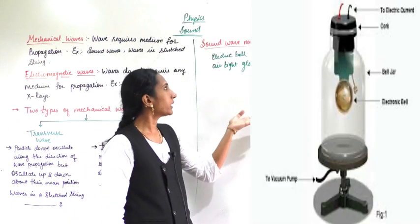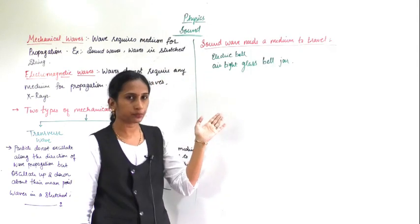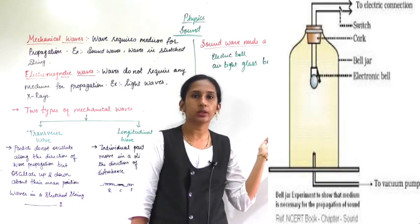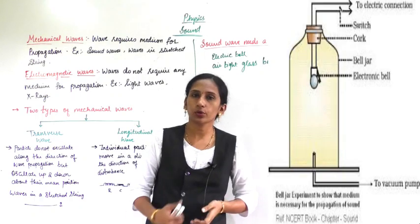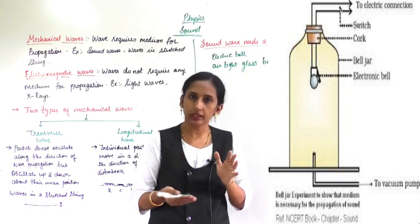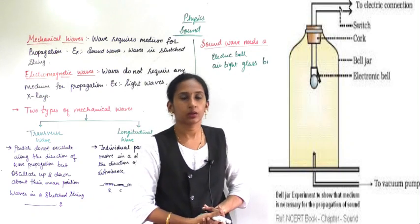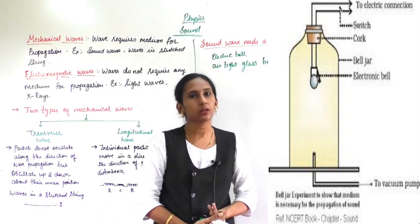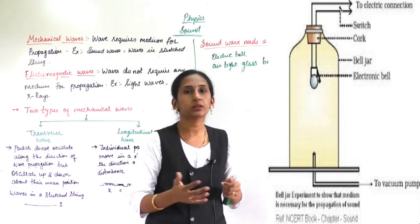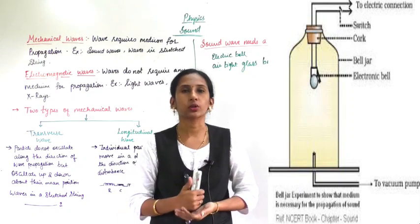You can see here — you will take first an electric bell, then an airtight glass bell jar. Inside the glass bell jar, you will keep the electric bell. Now you will make the bell ring. So inside the jar, you can hear the ringing of the electric bell. And you are going to study whether you can hear the sound in a vacuum condition or not.